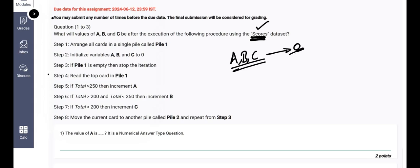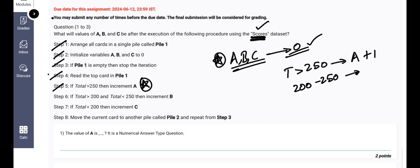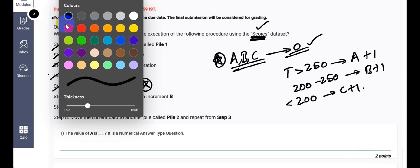Always note down the important point: initialize variables A, B, and C to zeros. This is equally important. If pile 1 is empty, stop the iteration. Read the top card in pile 1. If total is greater than 250, then we need to increment A by 1. If it is 200 to 250, then we need to increment B. If it is less than 200, then increment C.